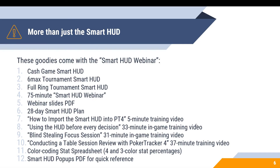When you get the Smart HUD you get more than just the HUD. It comes with the three HUDs, the 75-minute webinar, the webinar slides, a 28-day Smart HUD plan, four different videos to help you get more out of the Smart HUD, a color-coding stats spreadsheet showing the different color coding assigned to stats in the HUD, and a Smart HUD pop-ups PDF for quick reference with all six pop-ups.